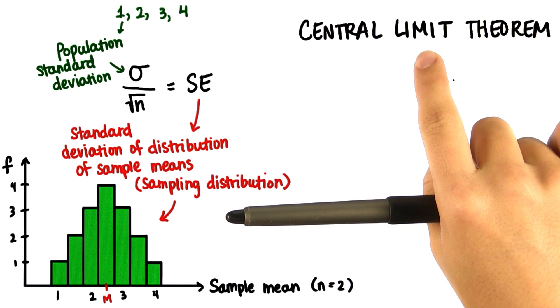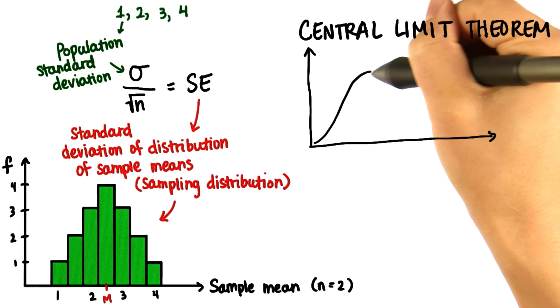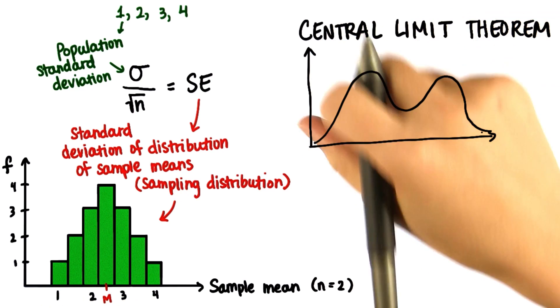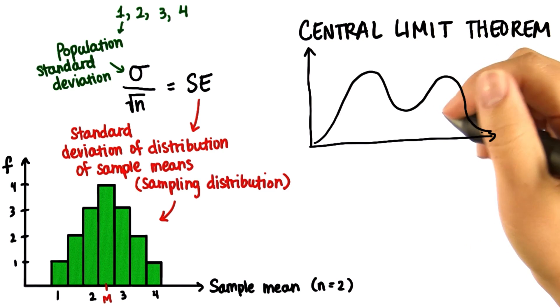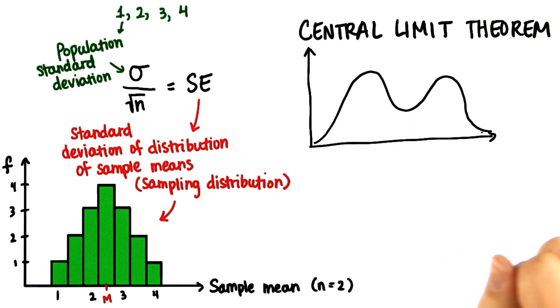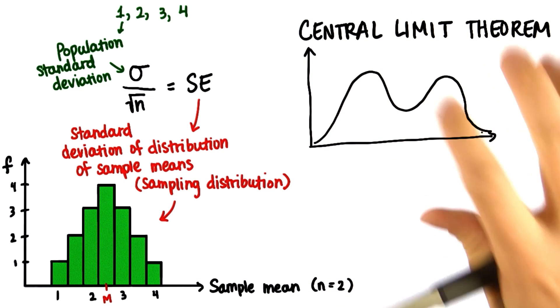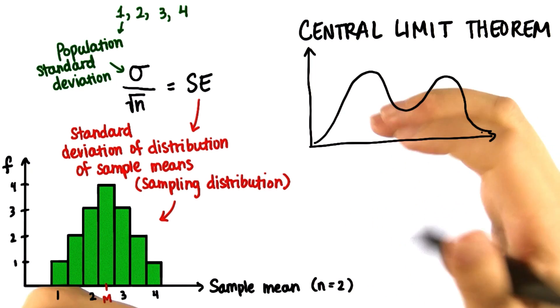Because of the central limit theorem, we can have a population of any shape. And then let's say we draw a sample from it and calculate the mean. And then we draw another sample from it and calculate the mean. And we keep doing this, say, 100 times.